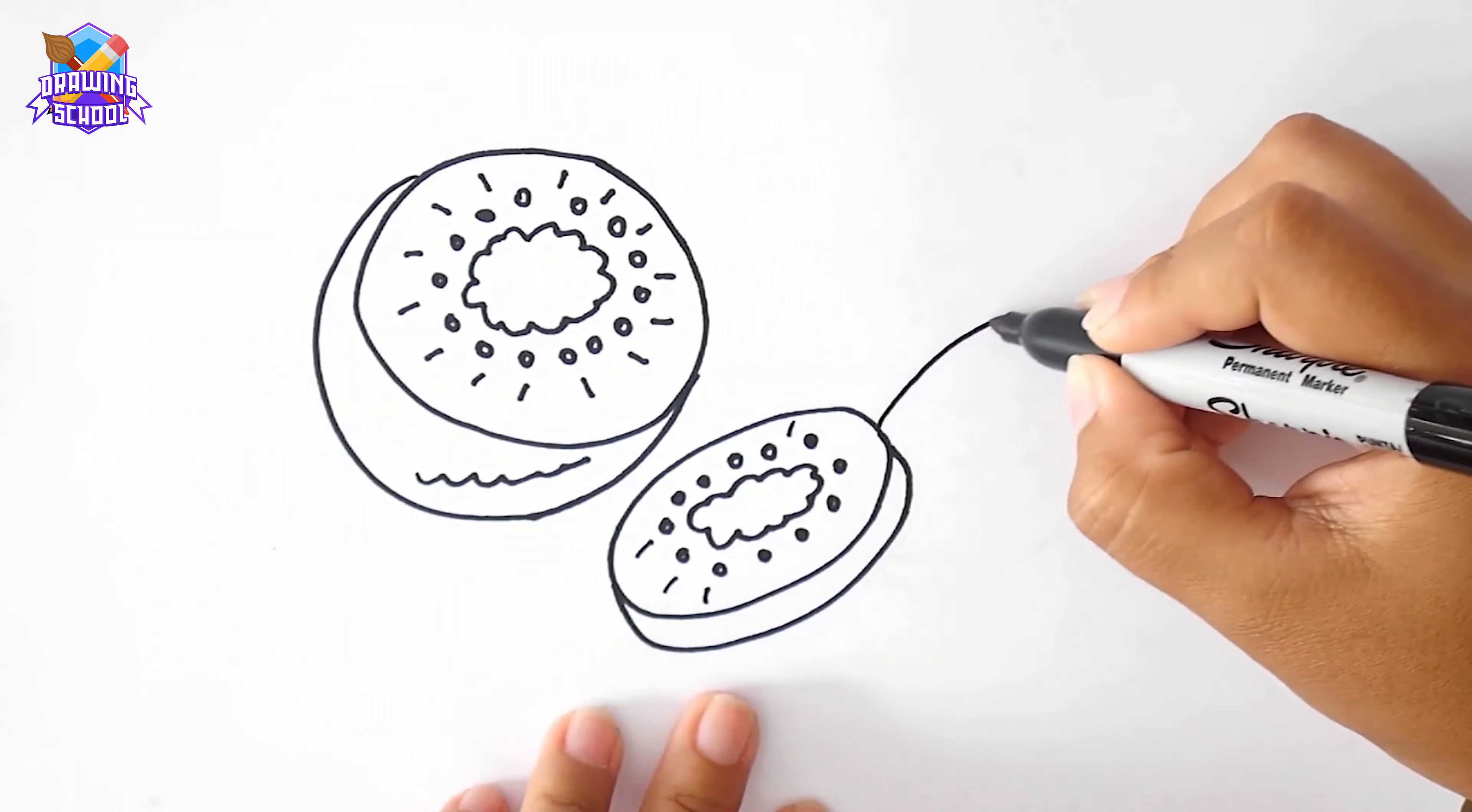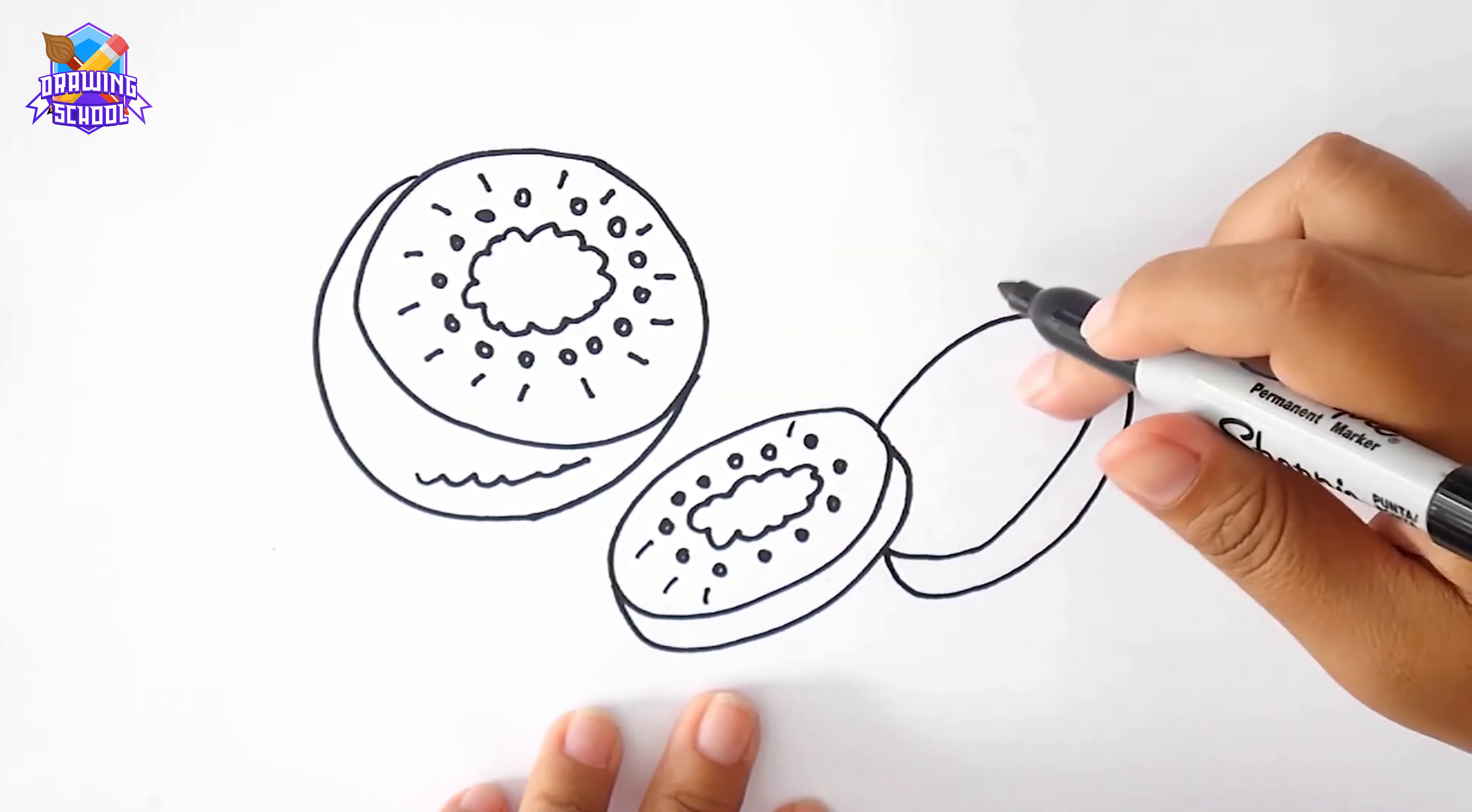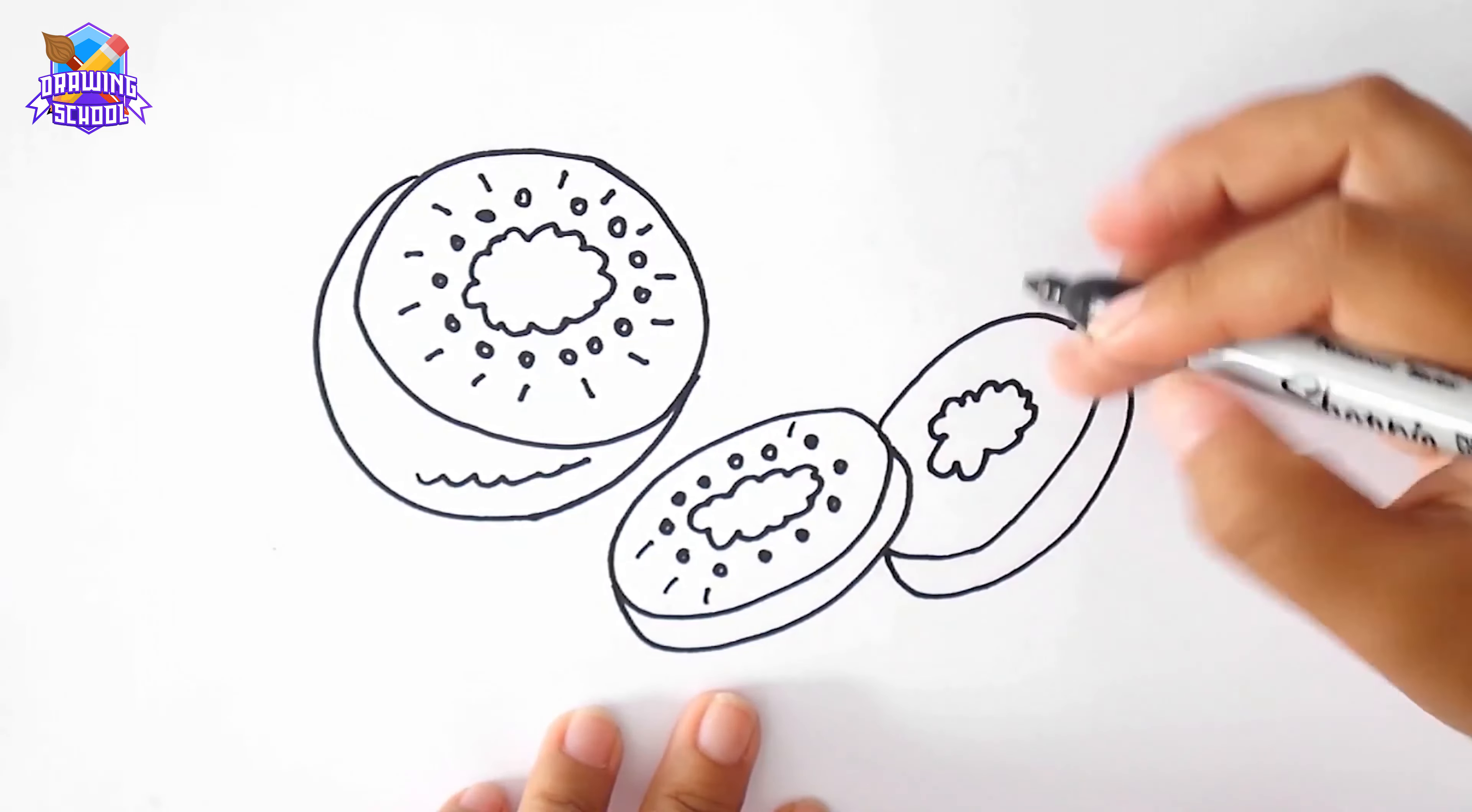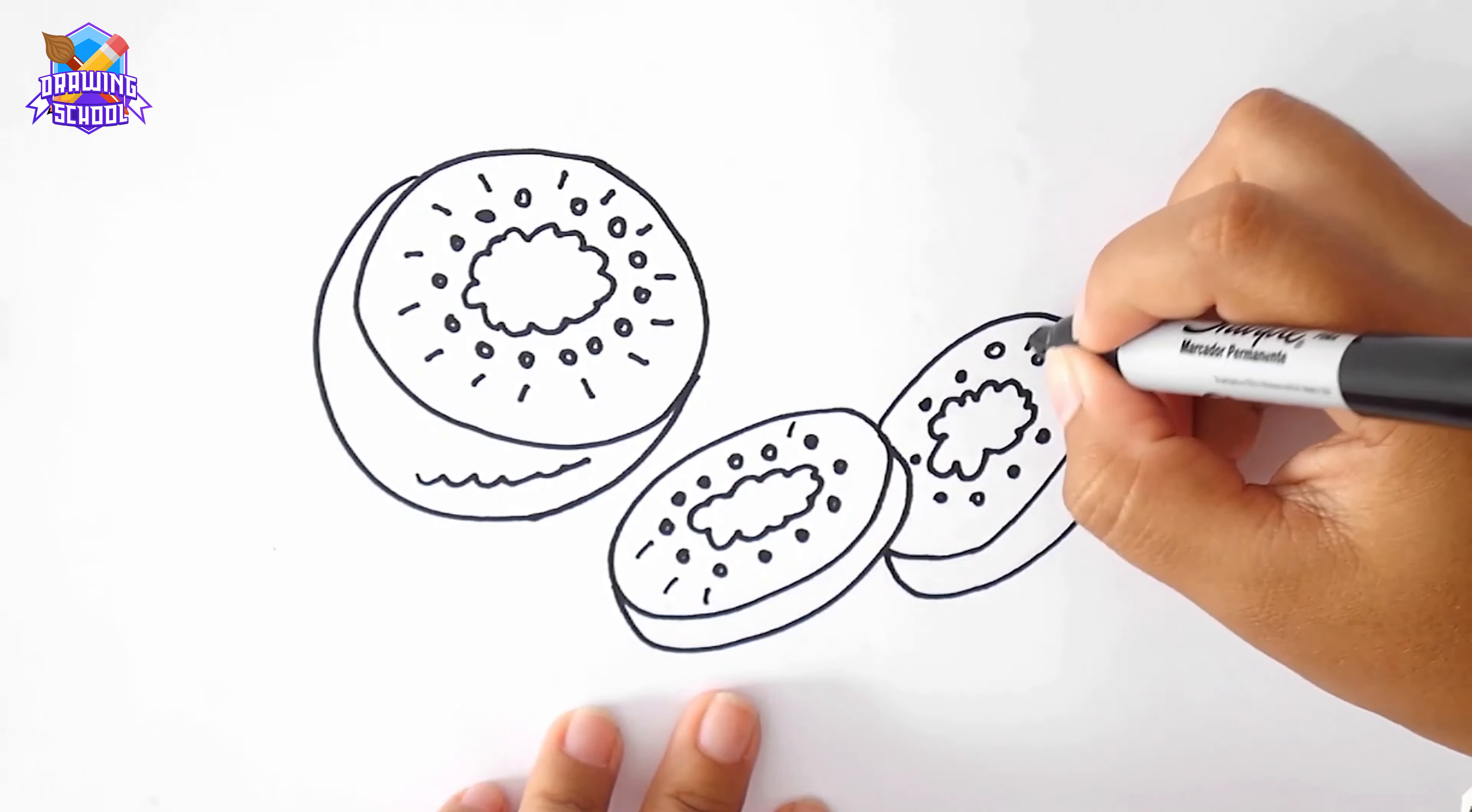Now we draw another slice like this. The center, some seeds around it, and a line in here.